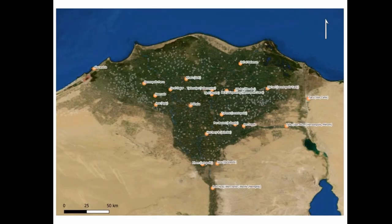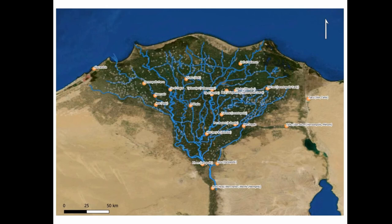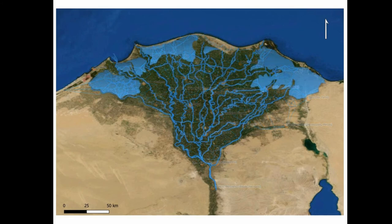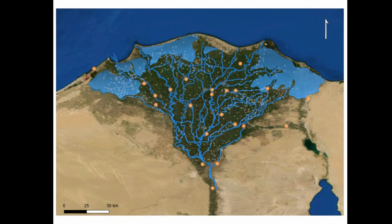Nonetheless, it is difficult to link each branch to a site in a specific period. A spider diagram was created in order to see if there is an organic relationship between the sites and the branches. As expected, we can barely see that the constellation of the first five nearest neighbors of each site form a shape similar to the hydrological network. Nonetheless, these do not solve the problem related to temporality.